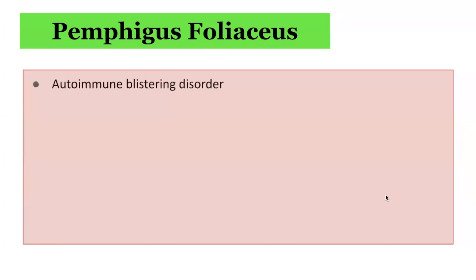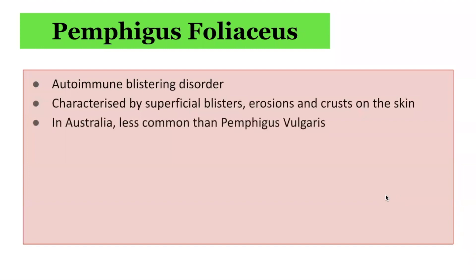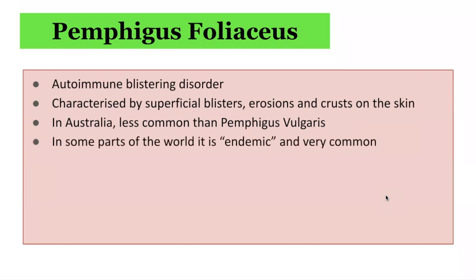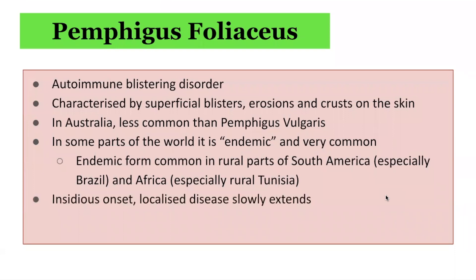Pemphigus foliaceus is an autoimmune blistering disorder characterized by superficial blisters, erosions, and crusting on the skin. In Australia, it is less common than Pemphigus vulgaris, which was discussed in part 2. However, in some parts of the world it is endemic and more common. An endemic form is found in rural parts of South America, especially Brazil, as well as some areas of Africa, especially rural Tunisia. It has an insidious onset with localized disease slowly extending, and it can also be photosensitive.